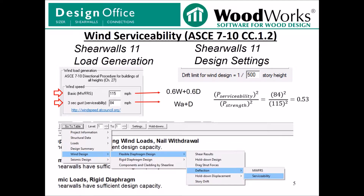In the design results, if you look under wind design — flexible or rigid diaphragm — you will see two options for deflection and hold-down displacement tables: one for the main wind force-resisting system, and another for serviceability.